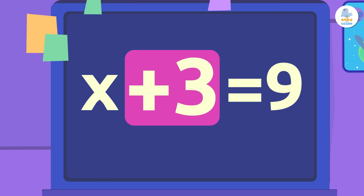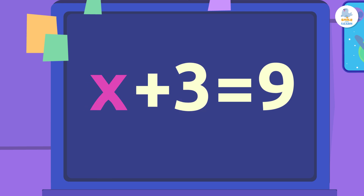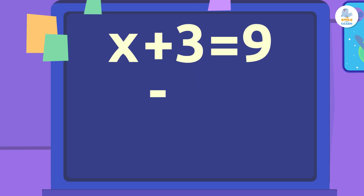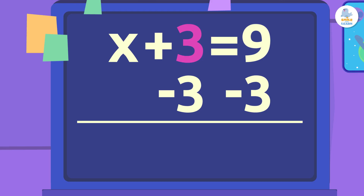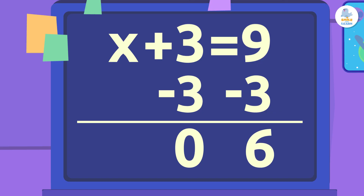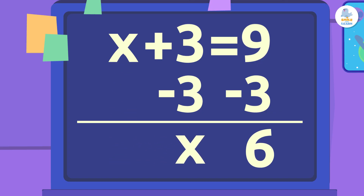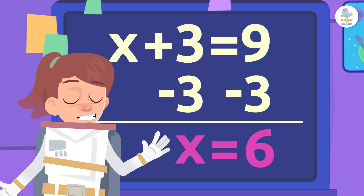So we need to move that to the right side and isolate the x. We do this with the reverse operation of addition, which is subtraction. To keep the equation balanced, we subtract 3 from each side of the equation. 3 minus 3 equals 0. 9 minus 3 equals 6. Now we've isolated x, so x equals 6. Equation solved!